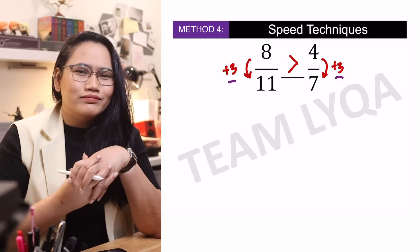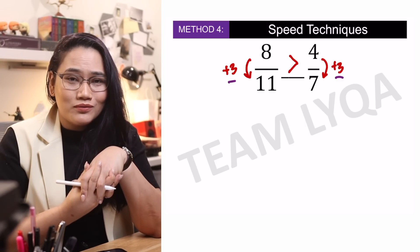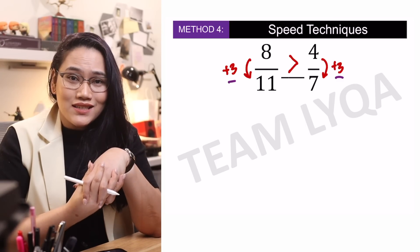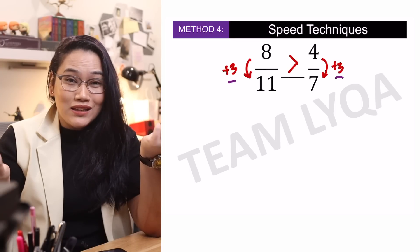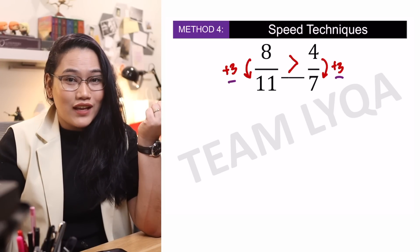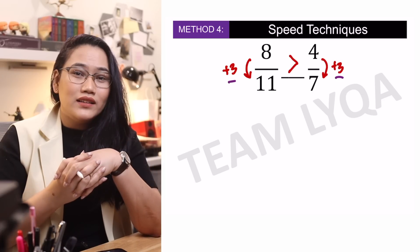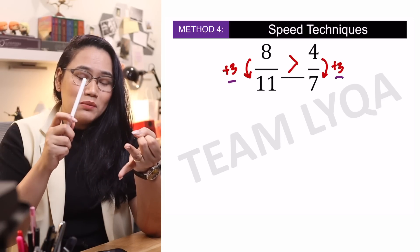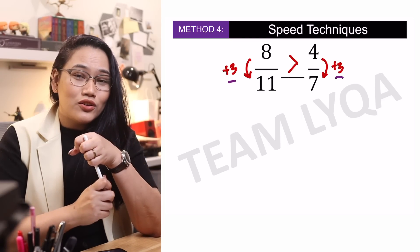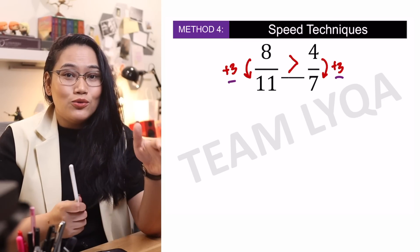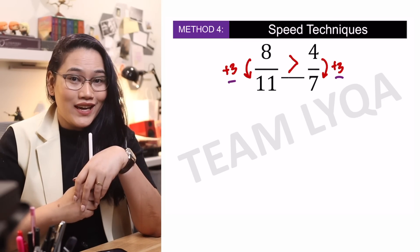Dito na papasok yung anong technique kang gagamitin mo. Sa totoo lang, kung saan ka mas mabilis. Sa akin, ang ginagawa ko ay look at it, try my speed techniques muna kasi it'll save me a lot of time. And then kapag hindi sila magkapareho ng numerator, hindi sila magkapareho ng denominator, at hindi pareho ang difference ng numerators to denominator nila, that's the time that I use cross multiplication. Now, the best way for you to remember this better and to practice din para mas mabilis is through a quick quiz. So if you're ready with your pen and paper, your timer starts now.